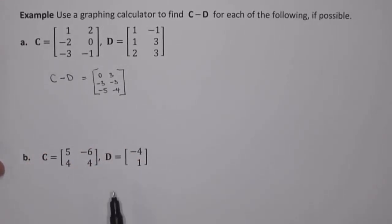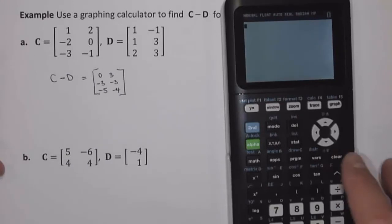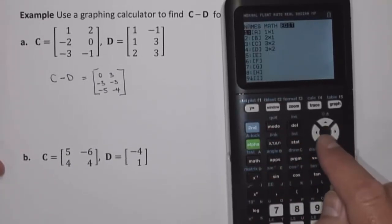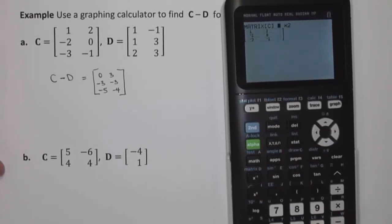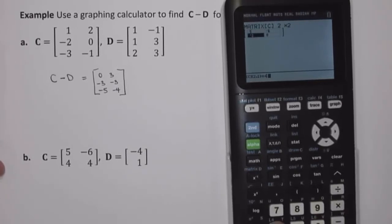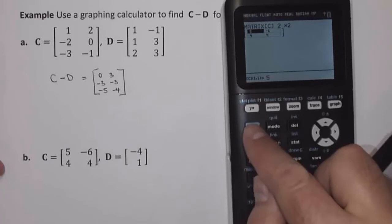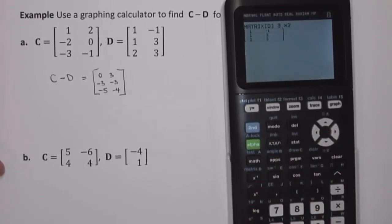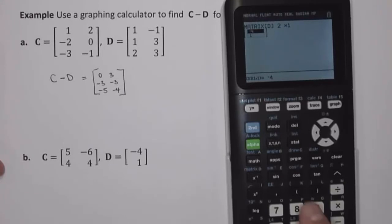Now let's look at Part B. I'm going to go back to matrix and edit matrix C. This time matrix C is a 2 by 2 matrix, so I'll enter: 5, negative 6, 4, 4. Then back to matrix, edit matrix D. Matrix D is a 2 by 1 matrix, and I'll enter: negative 4, negative 1. Second quit to go back to the home screen.